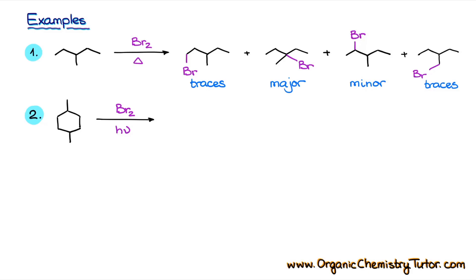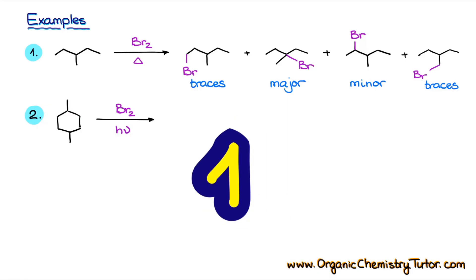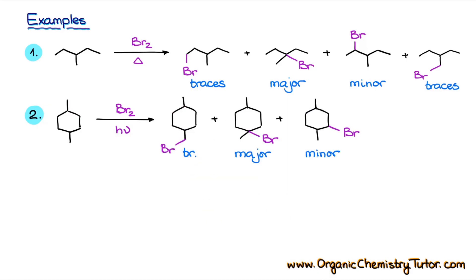Here is another example. This molecule also has some symmetry, so some positions around the molecule will be identical. Pause this video now and give it a go, then resume to check your answer. In this case, we have three possible products, and again the tertiary product — where the radical carbon is connected to three other carbons — is the major product.